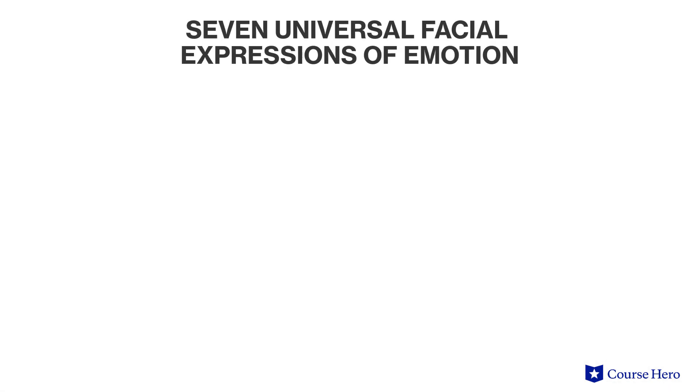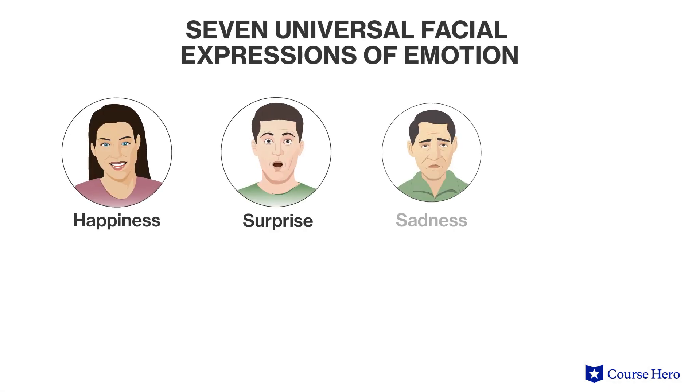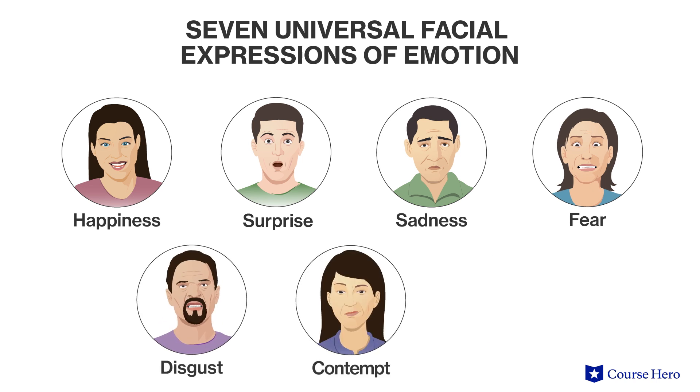The facial expressions used to convey happiness, surprise, sadness, fear, disgust, contempt, and anger are similar across developmental periods and cultures. They even occur in people who have been blind since birth and have never witnessed these expressions. These cultural and developmental similarities have led researchers to call these emotions the universal emotions.